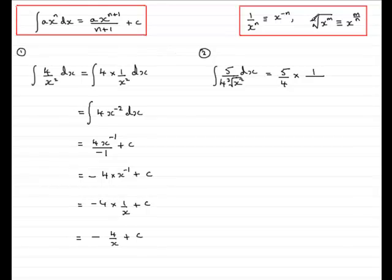And in this example, the n is 3, we're taking the cube root of x squared, so m is 2. So we can say that this is 1 over x to the power 2 thirds. Don't forget the integral sign and the dx, we're integrating with respect to x.